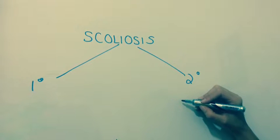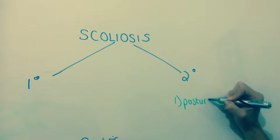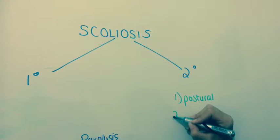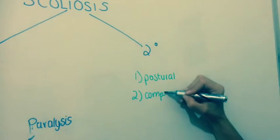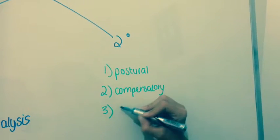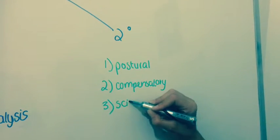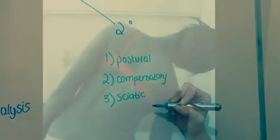Secondary scoliosis may be caused by postural issues, especially in adolescent girls, compensatory short leg or pelvic tilt due to hip contractures, or sciatic lateral tilt of the spine due to prolapsed intervertebral disc.